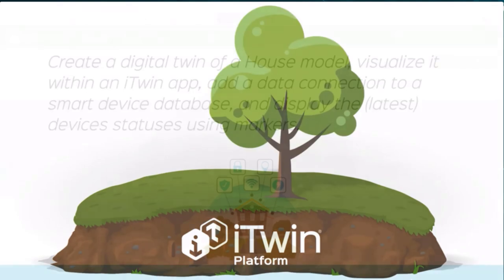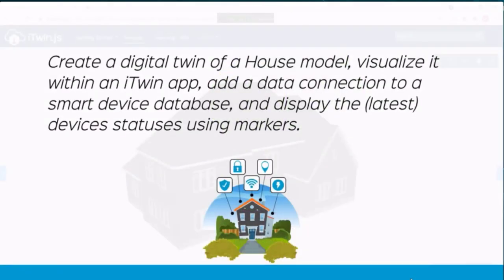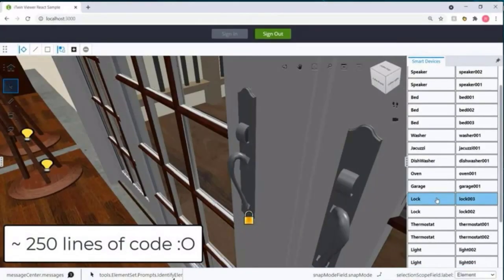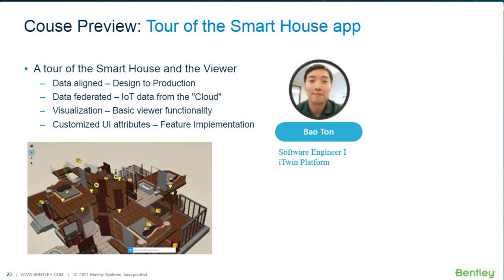What we did was give you a demonstration of creating a digital twin. In the course, we use a house model, visualize it within an iTwin app, and then add data connections to it. We connect to a smart device database and display device statuses of what's going on throughout that house. One last thing to mention is that all this work was done in only 250 lines of code—very little code was used to create the solution. I'm going to hand it over to Bao, who's going to give you a demo of the application we built for the course.